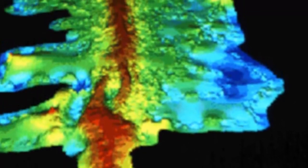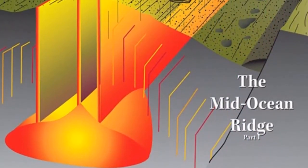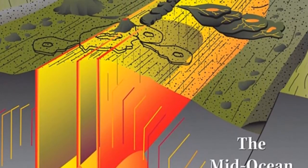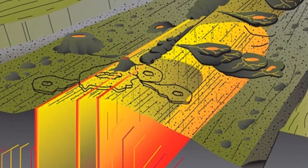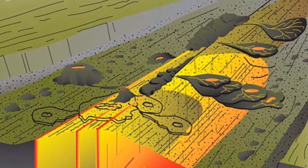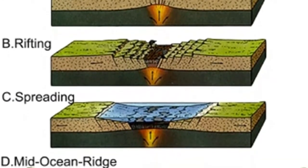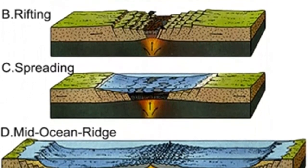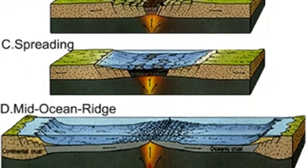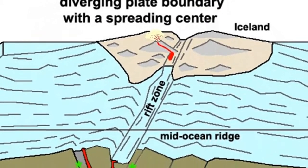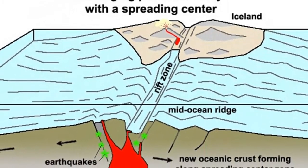Why are oceanic ridges elevated? The primary reason for the elevated position of a ridge system is the fact that newly created oceanic lithosphere is hot, occupies more volume, and is therefore less dense than cooler rocks of the deep ocean basin. As the newly formed basaltic crust travels away from the ridge crest, it is cooled from above as seawater circulates through the pore spaces and fractures in the rock. It also cools because it is moving away from the zone of upwelling, which is the main source of heat. As a result, the lithosphere gradually cools, contracts, and becomes more dense. This thermal contraction accounts for the greater ocean depths that exist away from the ridge.